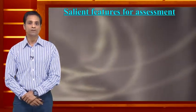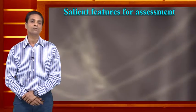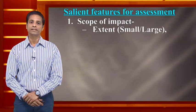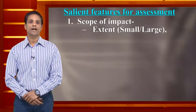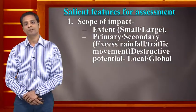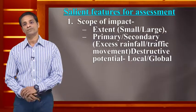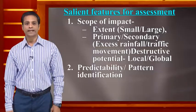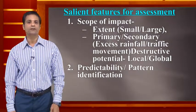The salient features for assessment are categorized into four domains. The first is the scope of impact — whether it is local, national, or global — and whether the impact is primary or secondary. For example, excess rainfall causes flooding as a primary impact, but if flooding causes a landslide, that is a secondary impact. The second feature is predictability or pattern identification.